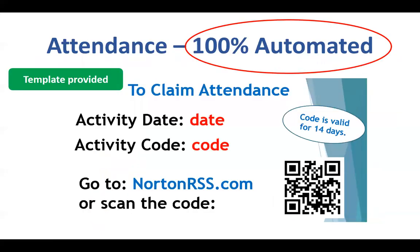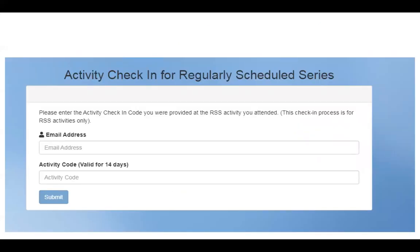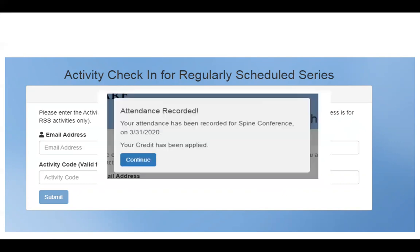Attendance for RSS is 100% automated, which has many advantages for the attendee — they get attendance in real time. If you want a roster that is fine, but we do not need the roster and that is not how we will provide credit. We provide RSS activity coordinators with a code that is unique to each date of activity. We ask that you use this with your attendees for them to claim attendance. The code we provide is valid for 14 days. Here is a screenshot of what it looks like when an individual goes in: they scan the QR code, enter their email address associated with their account, enter the code, and their attendance is recorded.